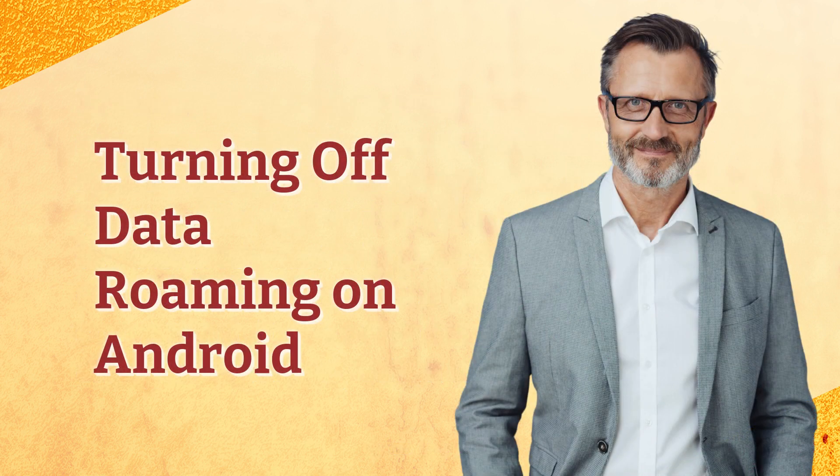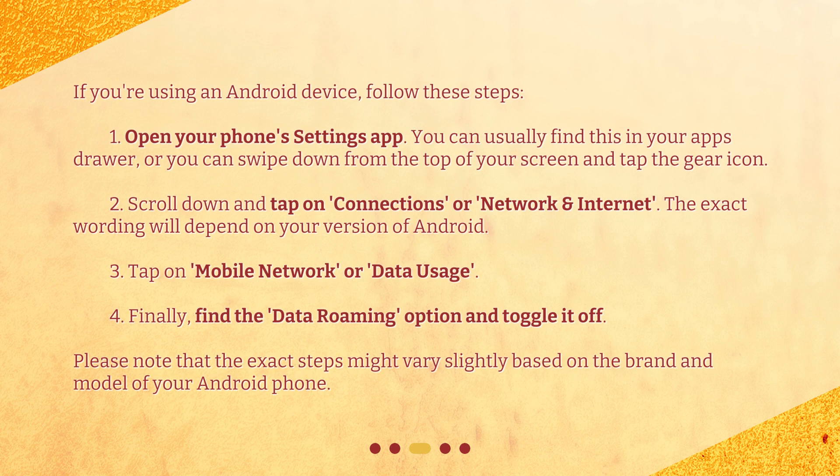Turning off data roaming on Android. If you're using an Android device, follow these steps. 1. Open your phone's settings app. You can usually find this in your app drawer, or you can swipe down from the top of your screen and tap the gear icon. 2. Scroll down and tap on Connections or Network and Internet. The exact wording will depend on your version of Android.